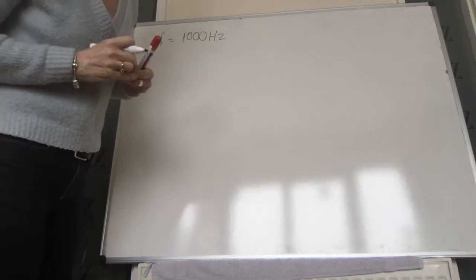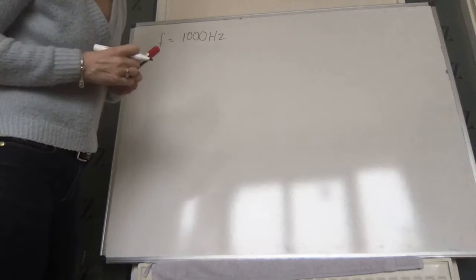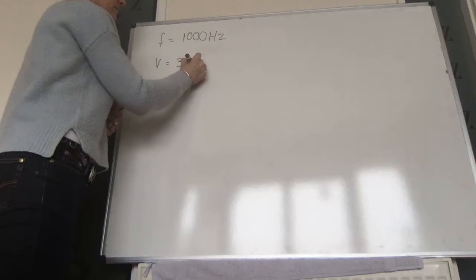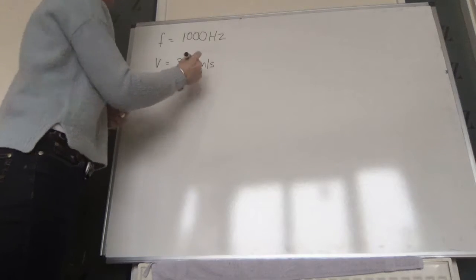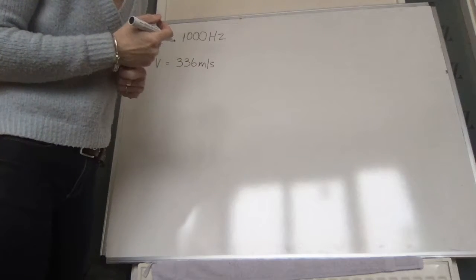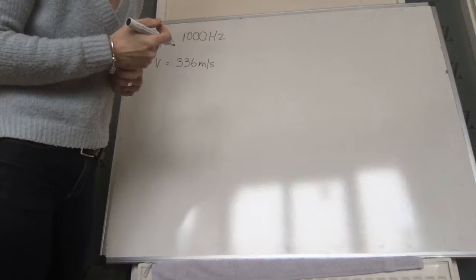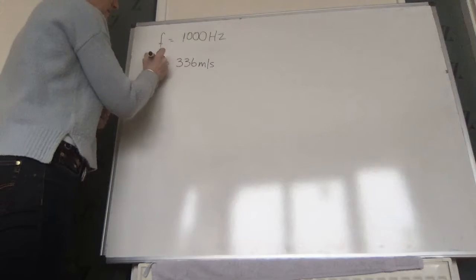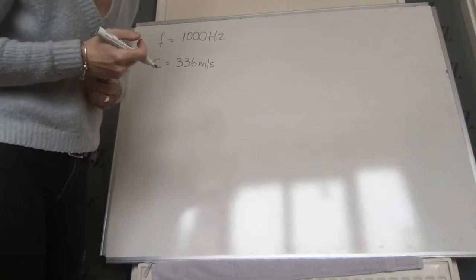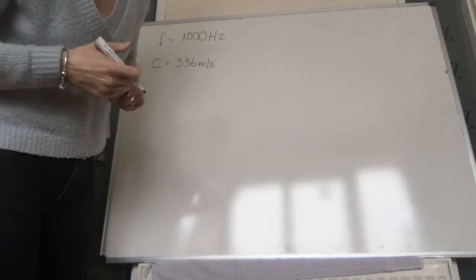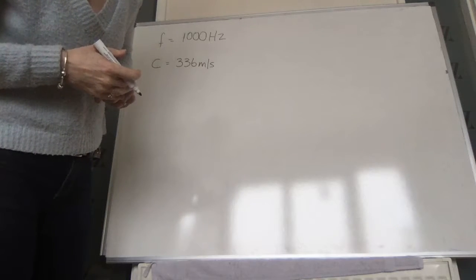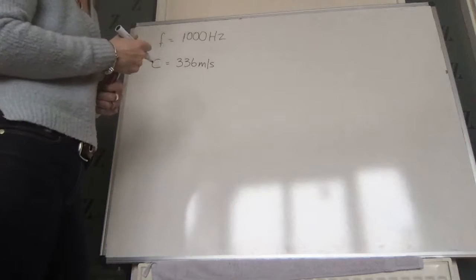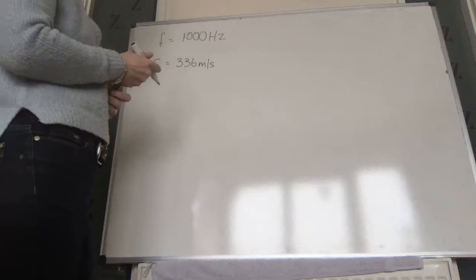If the velocity of sound is 336 metres per second — we won't call it V because the velocity of the sound wave is that — what is the frequency heard by the observer when the car is approaching the observer and when the car is moving away?